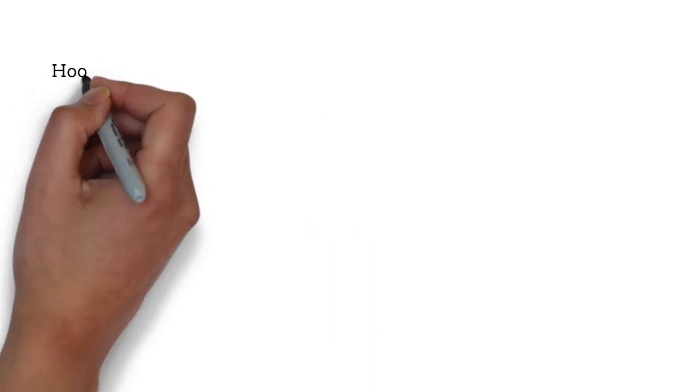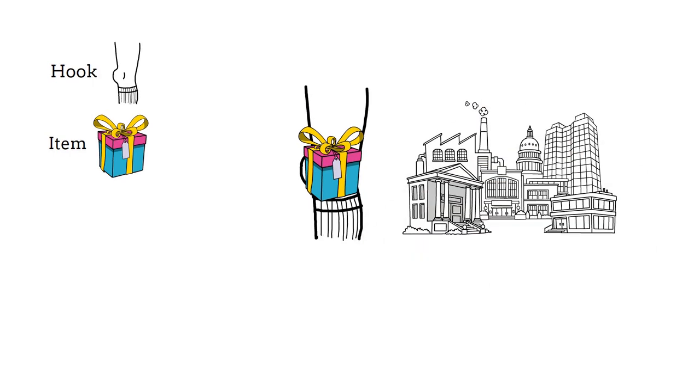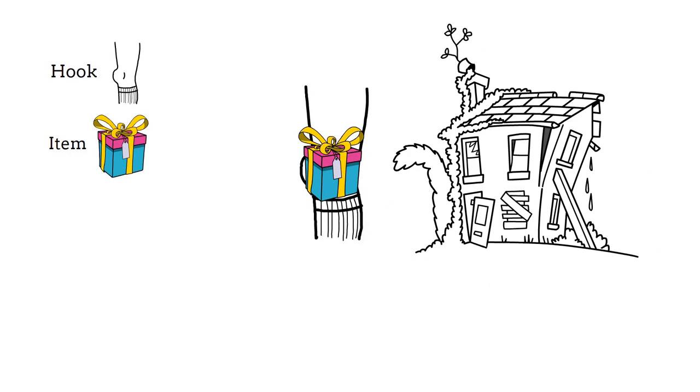The next hook is the knee. The next item is the gift. Imagine you tie the gift box to your knees. You are walking around with the gift box dangling from your knees. Imagine the gift box hitting buildings as you walk past them. You are damaging and destroying buildings as you walk past them.